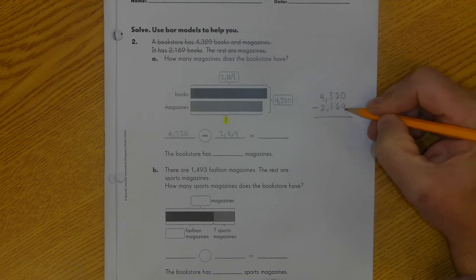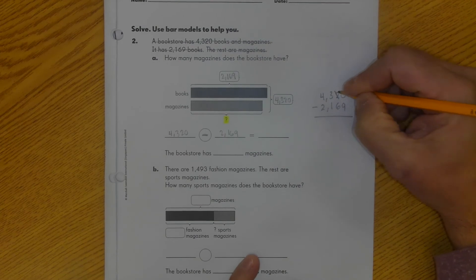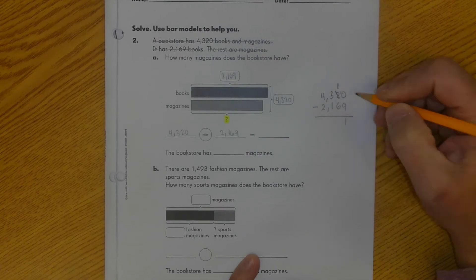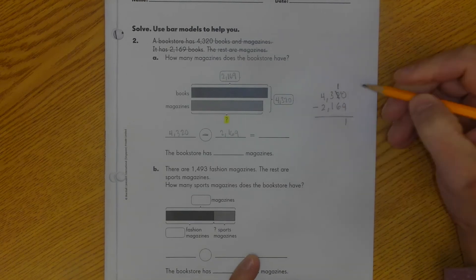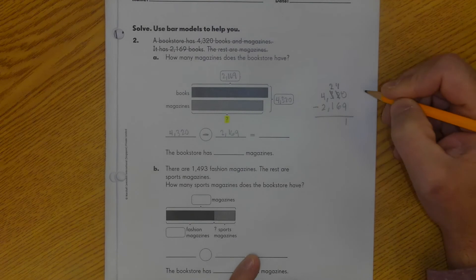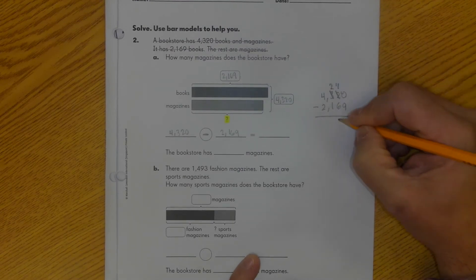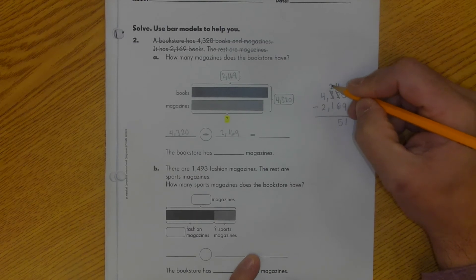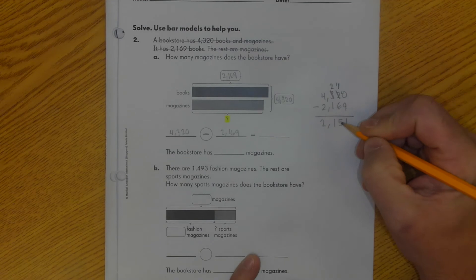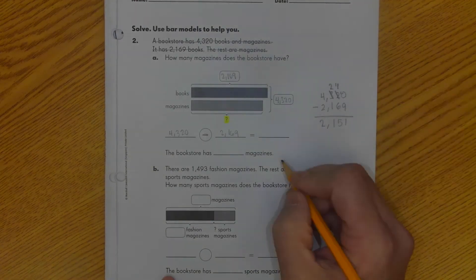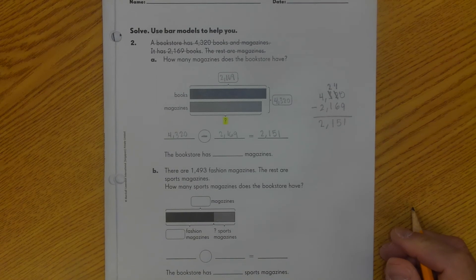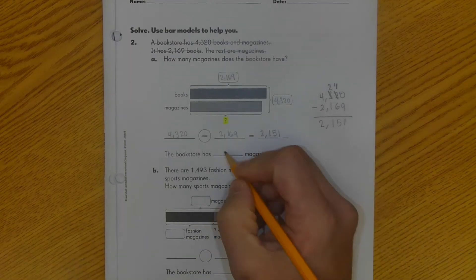9, 0, take away 9. I know I can't do. So automatically I have to regroup. And I go over and I borrow 1 from here. That becomes a 1 and this becomes a 10. Now I can do it. 10 minus 9 is 1. 1, take away 6. I can't do that so I have to regroup again. So I'm going to go over to my hundreds place and I'm going to take 100 away. Now I have 200 and I have 11 tens. So 11 minus 6 is 5. I can subtract 1 from 2. So 2 minus 1 is 1. And then I can subtract 2 from 4. So 4 minus 2 is 2. If I've done my math correctly, I know that there are 2,151 magazines at the bookstore.